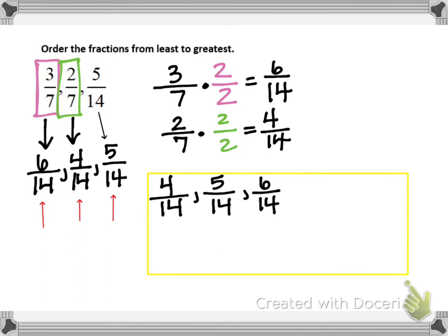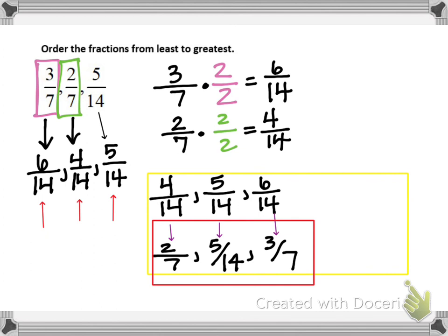Now, to get our final answer, we will replace the equivalent fractions with their original form. 4/14 began as the fraction 2/7, so that will be the smallest fraction. 5/14 originally was 5/14, and that will stay in the middle. And the fraction 6/14 was originally written as 3/7. So from least to greatest, the fractions are 2/7, 5/14, and 3/7.